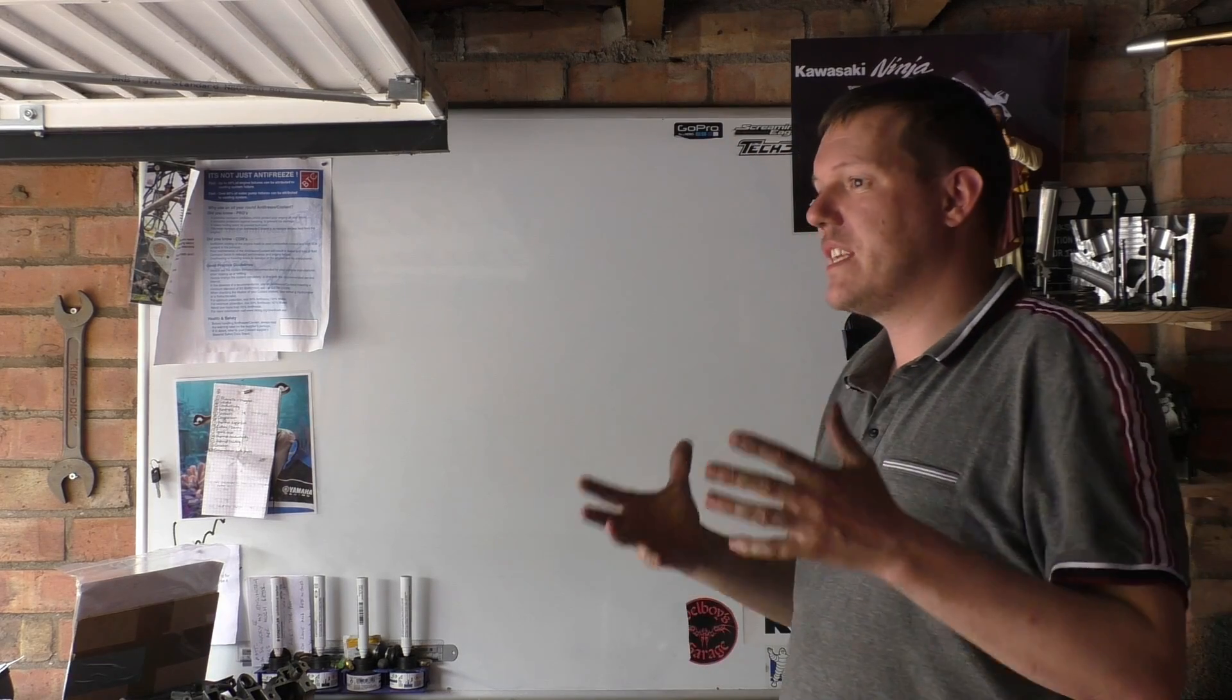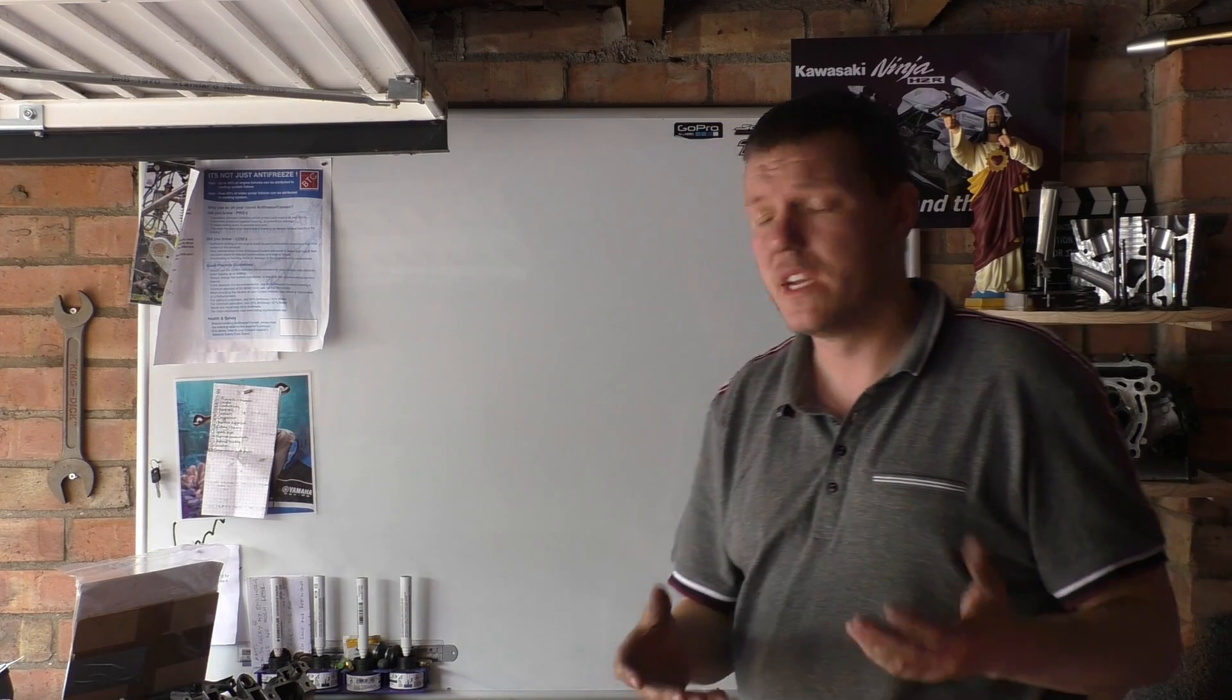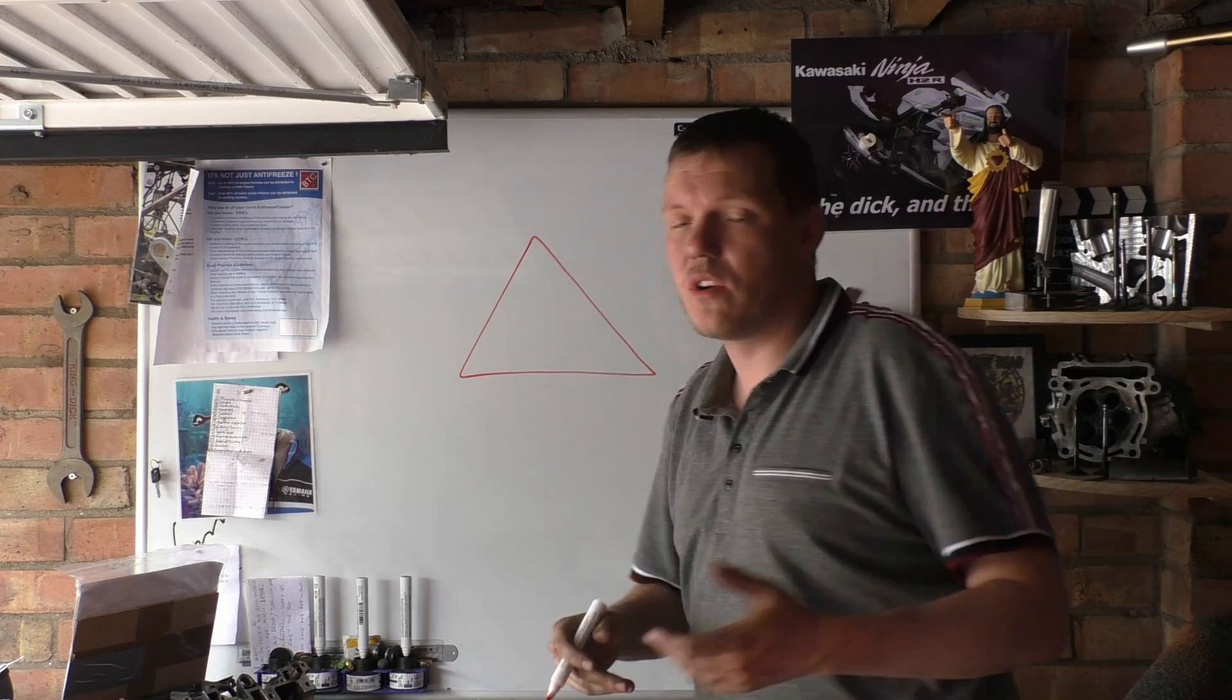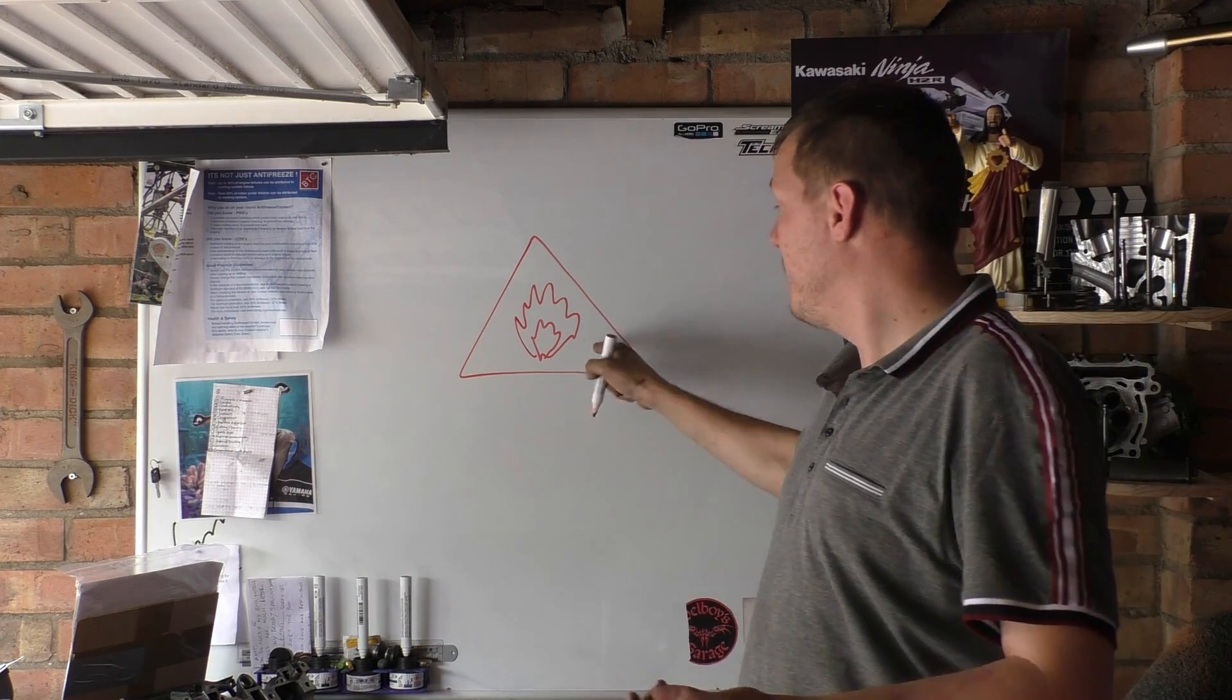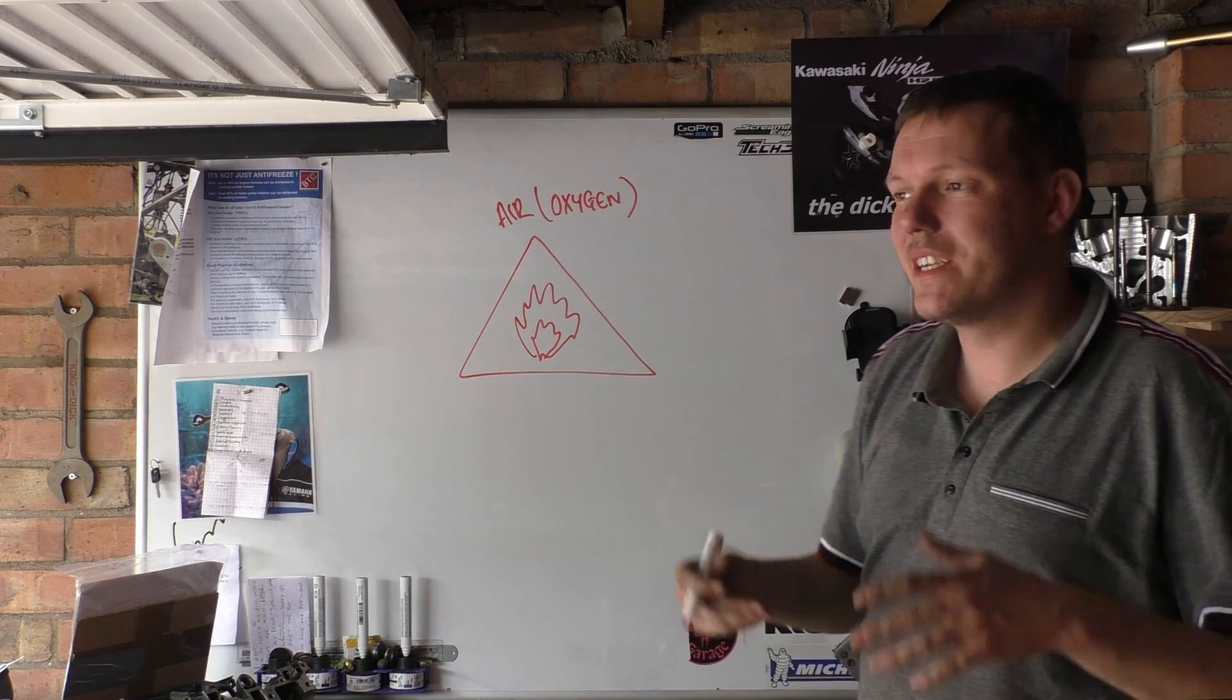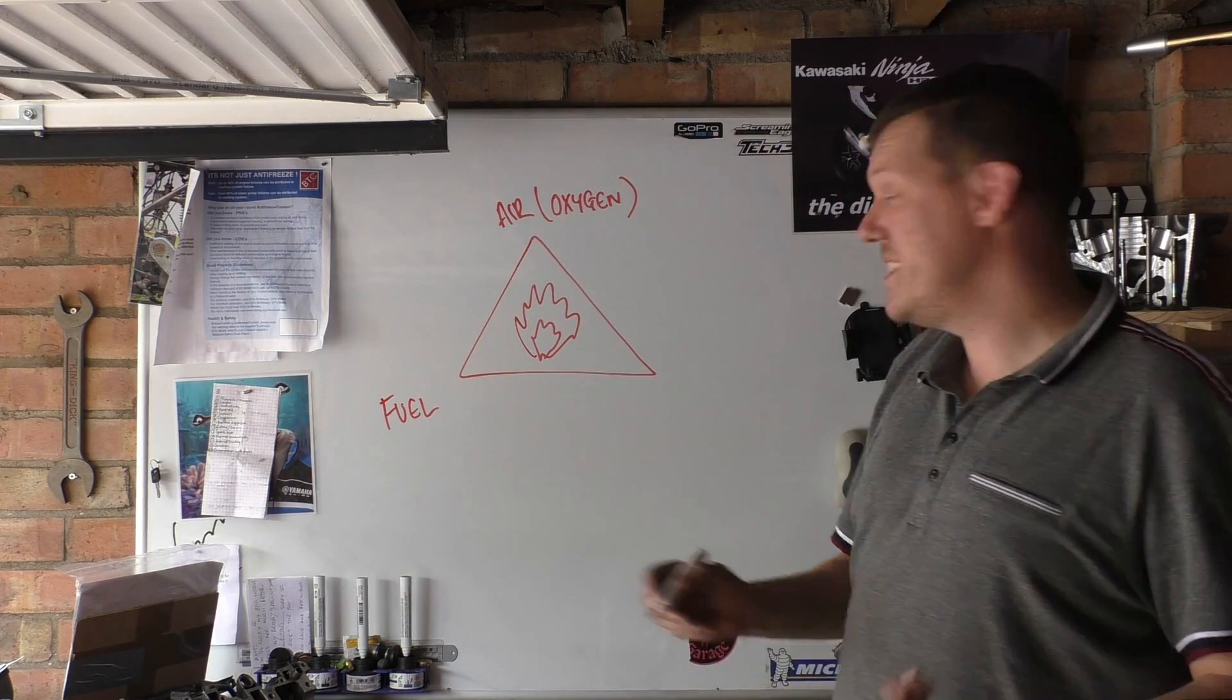So combustion - these are internal combustion engines and I think I've done this in a previous video but I think it kind of got lost or people didn't really take note of it, so we're just going to focus on combustion. We have the fire triangle. If you want fire you have to have air, or more precisely oxygen. You have to have oxygen because combustion or basically fire is an exothermic oxidizing reaction. We then need fuel and then we need heat.